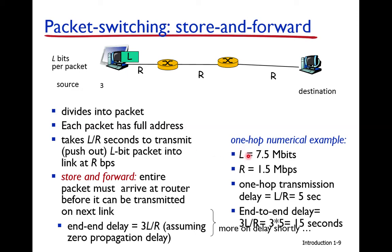Suppose L is 7.5 MB of data and the whole data is transmitted in a single packet. How much time does it take from source to destination? The link bandwidth R is 1.5 Mbps, so the time is L divided by R: 7.5 divided by 1.5 equals 5 seconds.